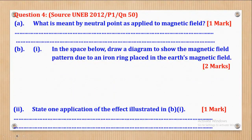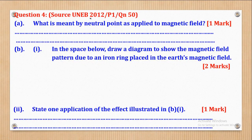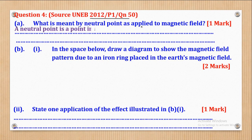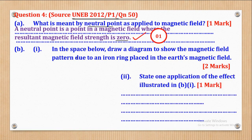Question 4 was from 2012 Paper 1, Question 50. Part A says: what is meant by neutral point as applied to magnetic field? A neutral point is a point in a magnetic field where the resultant magnetic field strength is zero. If you wrote that, that would be your one mark.